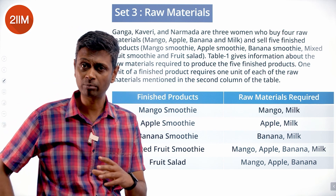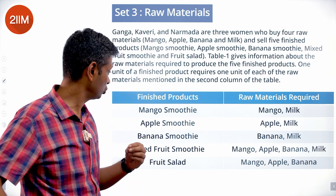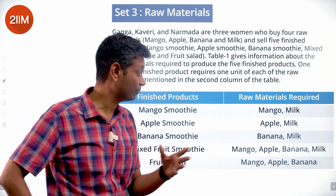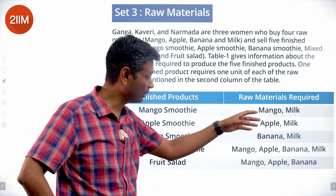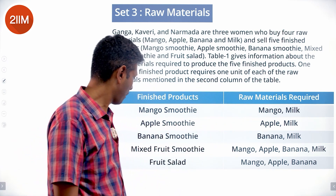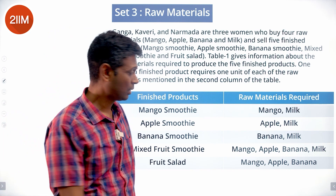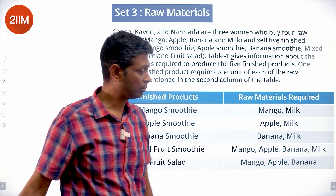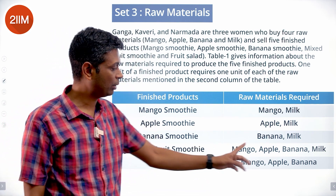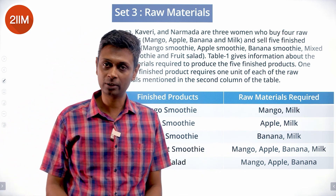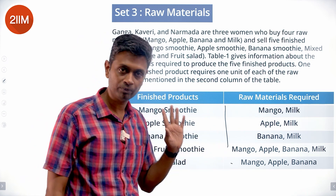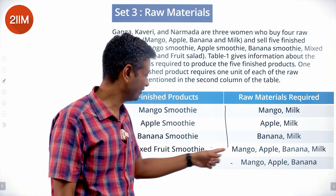Mango smoothie is mango and milk. Apple smoothie is apple and milk. Banana smoothie is banana and milk. Mixed fruit smoothie has everything — mango, apple, banana and milk. Fruit salad is mango, apple and banana — no milk. So all four smoothies have milk; fruit salad has no milk. Mixed fruit smoothie has everything.